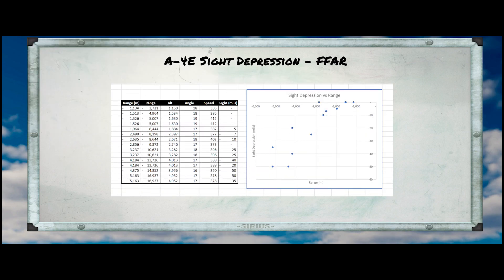There are a couple of interesting features in this data. First, it conforms to our basic pattern of a long-range falling trajectory and a short-range flat trajectory — it looks like the flat trajectory starts at a slant range of around 5,000 feet. Second, the data gets increasingly noisy outside this range, which is what we saw in the video. This confirms that FFARs really aren't meant to be used beyond that 1,500-meter / 5,000-foot range.